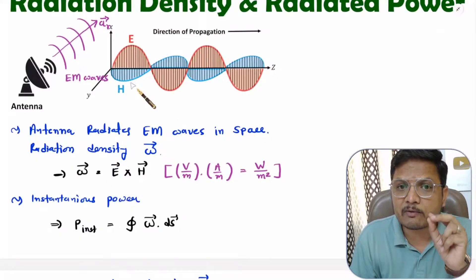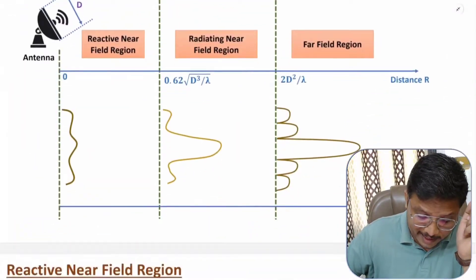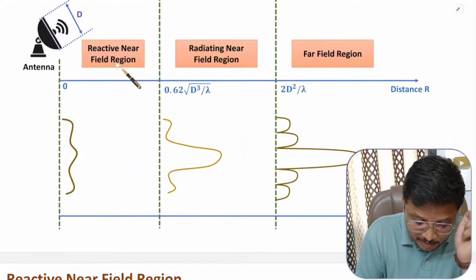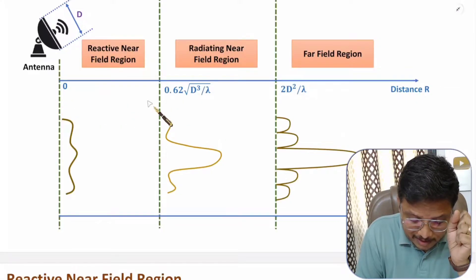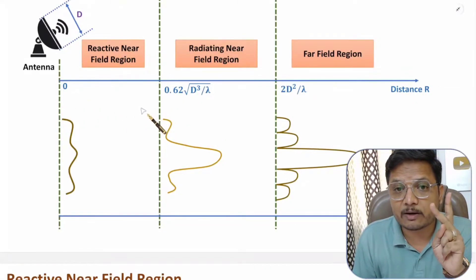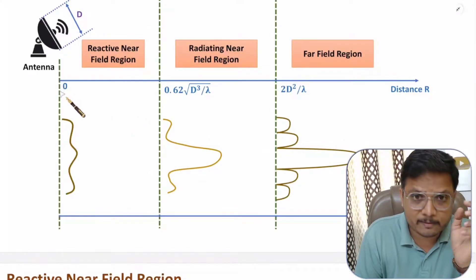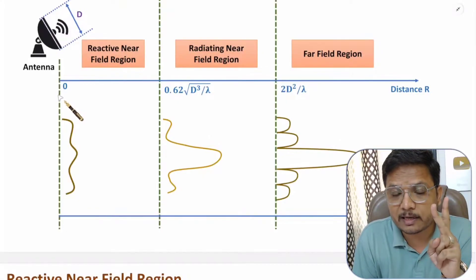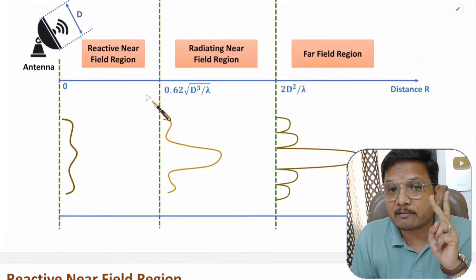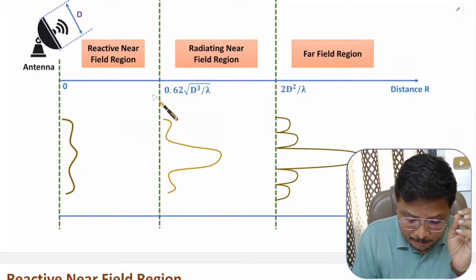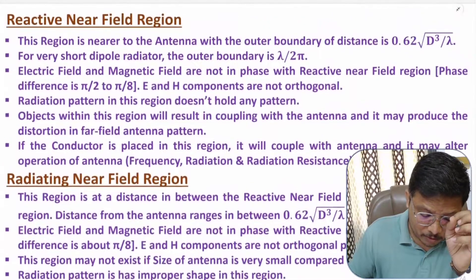This phase difference happens because of inductive components. In the reactive near field region there are higher inductive components, where there will be a phase difference ranging from π/2 to π/8. At zero distance there will be a π/2 phase difference between E and H field, and as you move farther, that phase difference decreases down to π/8.